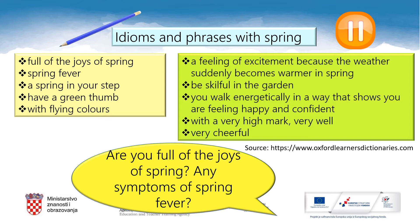Please pause the video and copy everything into your notebooks and do the task. Let's check. Full of the joys of spring means very cheerful. Spring fever is a feeling of excitement because the weather suddenly becomes warmer in spring. A spring in your step is when you walk energetically in a way that shows you're feeling happy and confident. When someone has a green thumb, it means that person is skillful in the garden. And with flying colours means with a very high mark — very well. For example, when you do an exam and pass it with flying colours, it means you did well.